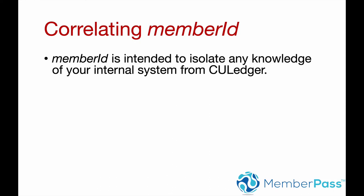I just want to discuss quickly how we use Member ID inside of the CO Ledger Member Pass API. In essence, we don't want to know, from the CO Ledger side, anything that is internal to your side. So we're looking for Member ID to really isolate us from any knowledge of your system.